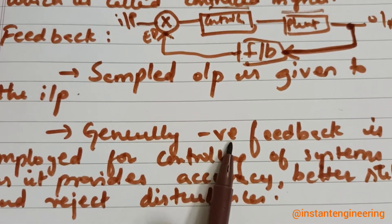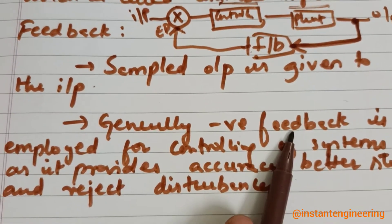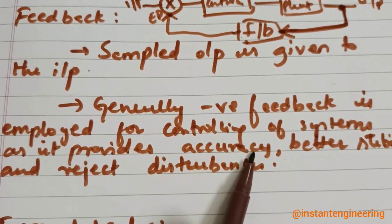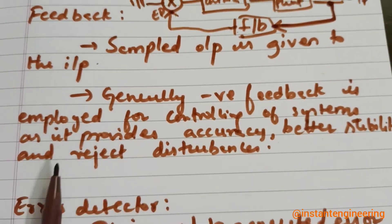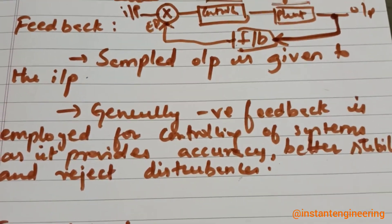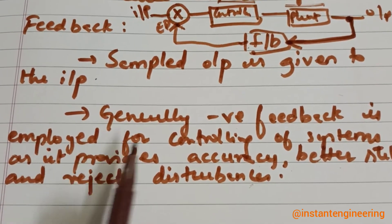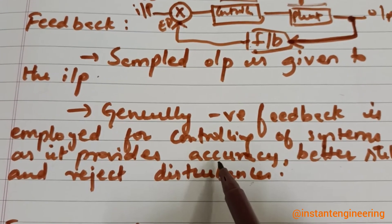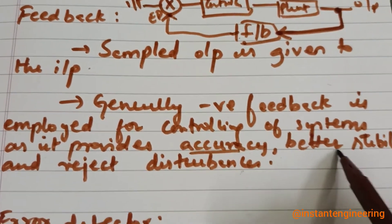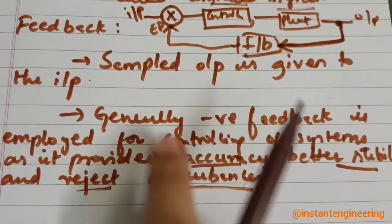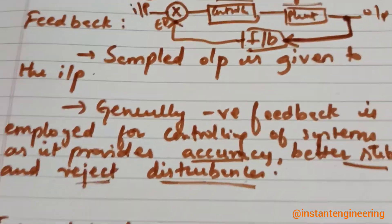Generally, negative feedback is employed for controlling systems because it provides better accuracy, better stability, and rejects disturbances. That is why we use feedback. If asked in a viva, the answer is: we use feedback to have better accuracy, stability of the signal, and to reject any disturbances in the signal.